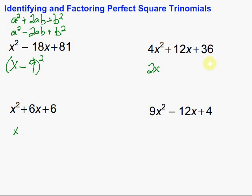Then 36, well, let's see. 6 times 6 gets us 36, so we have 2x and 6. Then, remember, we have to check the middle term. So, here we have 2x times 6, which would be 12x, times 2 would be 24x.